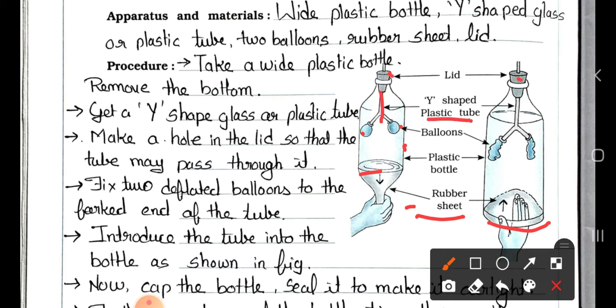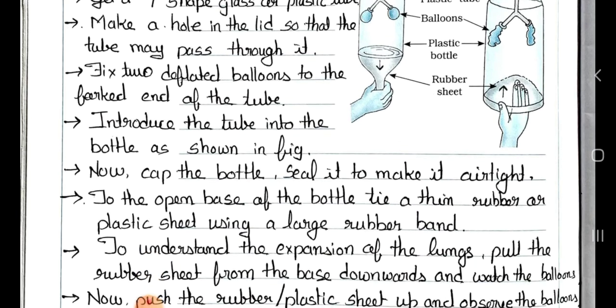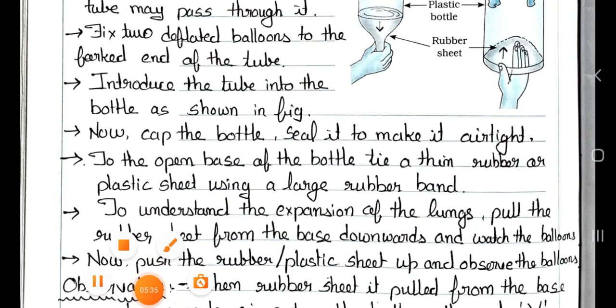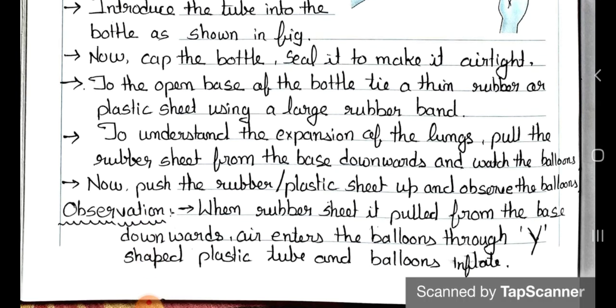Get a Y-shaped glass or plastic tube. Make a hole in the lid so that the tube may pass through it. Fix two deflated balloons to the forked end of the tube. Introduce the tube into the bottle as shown in the figure. Now cap the bottle. Seal it to make it airtight. To the open base of the bottle, tie a thin rubber or plastic sheet using a large rubber band. To understand the expansion of the lungs, pull the rubber sheet from the base downwards and watch the balloons. Now push the rubber or plastic sheet up and observe the balloons. Observation: When rubber sheet is pulled from the base downwards, air enters the balloons through Y-shaped plastic tube and balloons inflate.